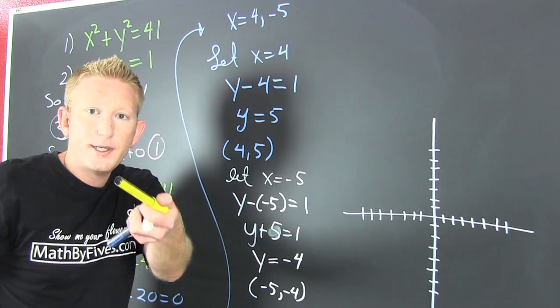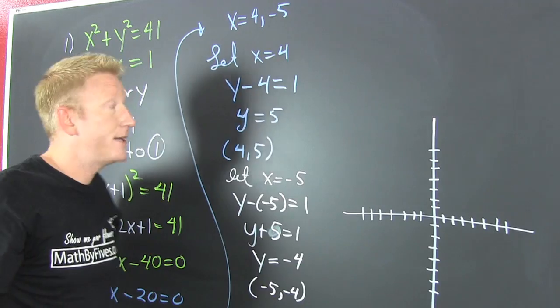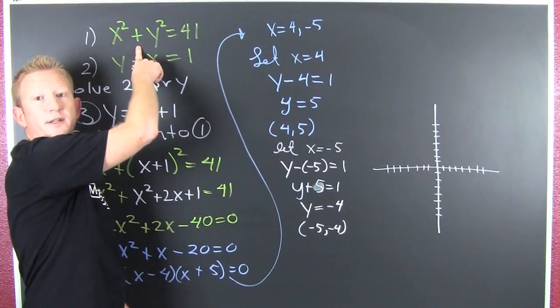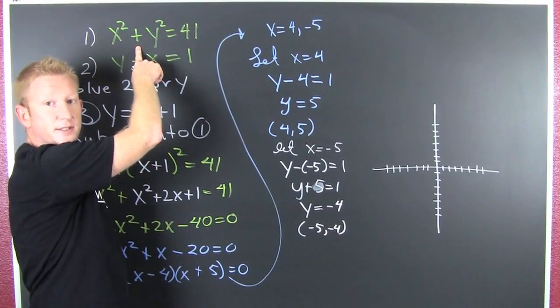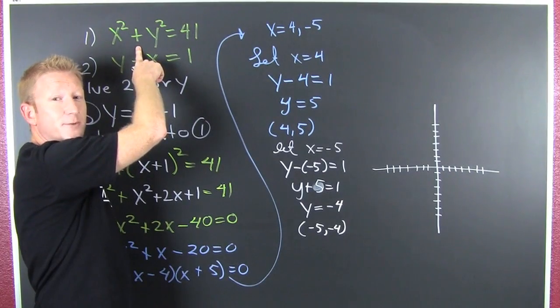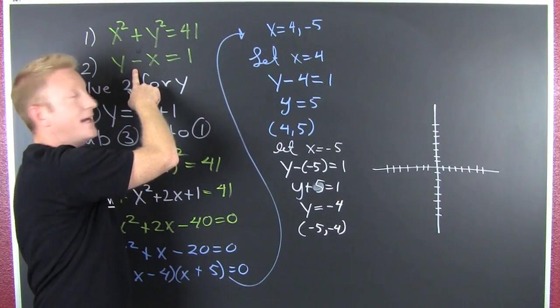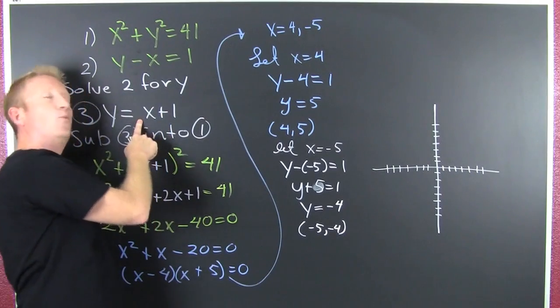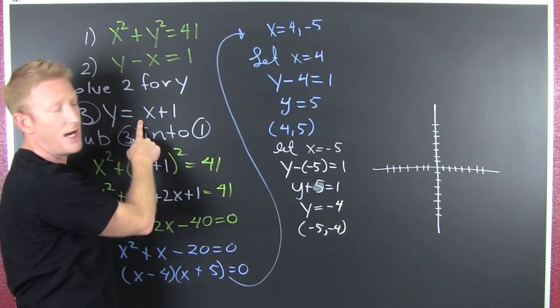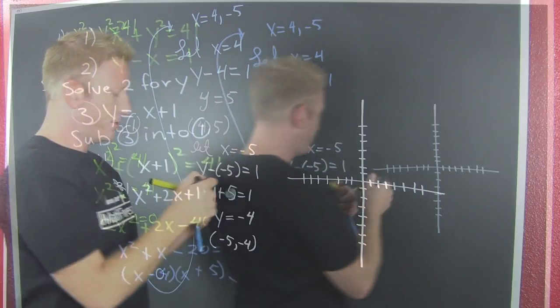Now this makes sense. If we were going to go and we were going to graph these two guys. This top one is a circle whose radius is the square root of 41, which is in between 6 and 7. This bottom one is a line. And y equals mx plus b. It's this line. So let's go and let's graph those two guys.